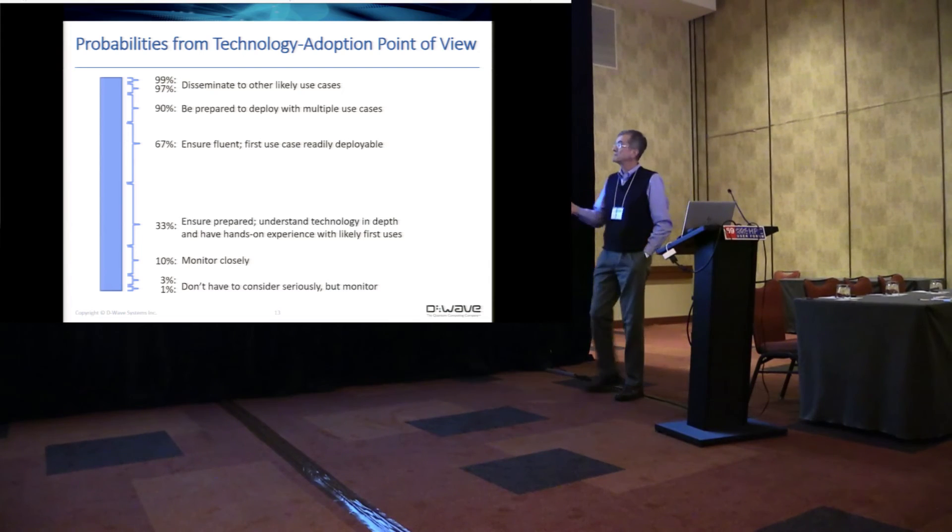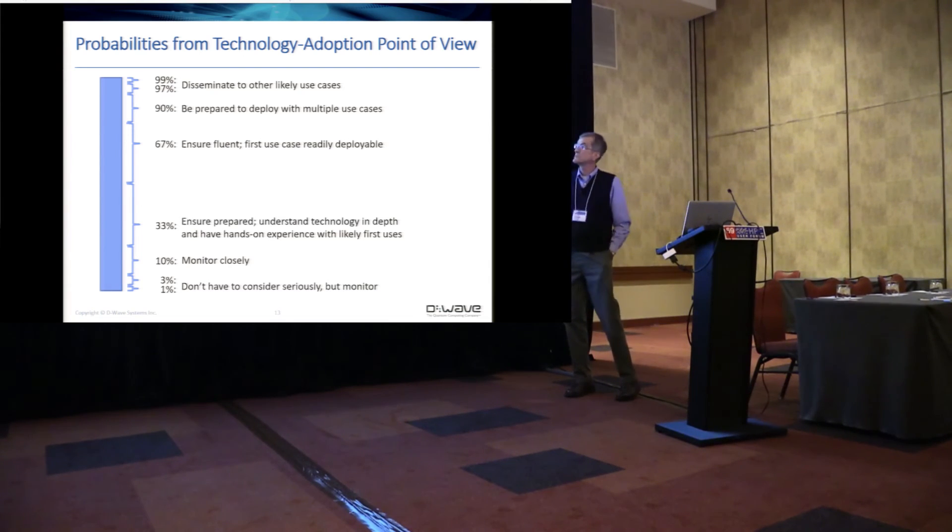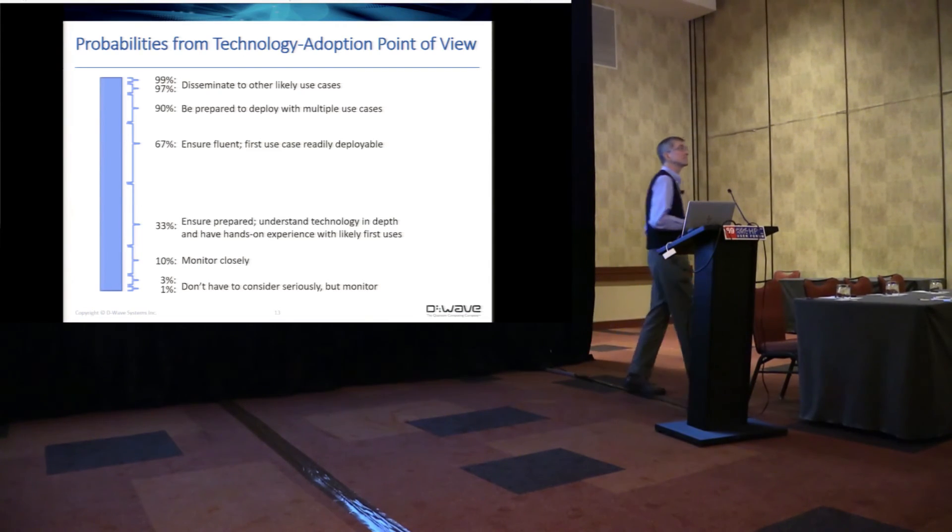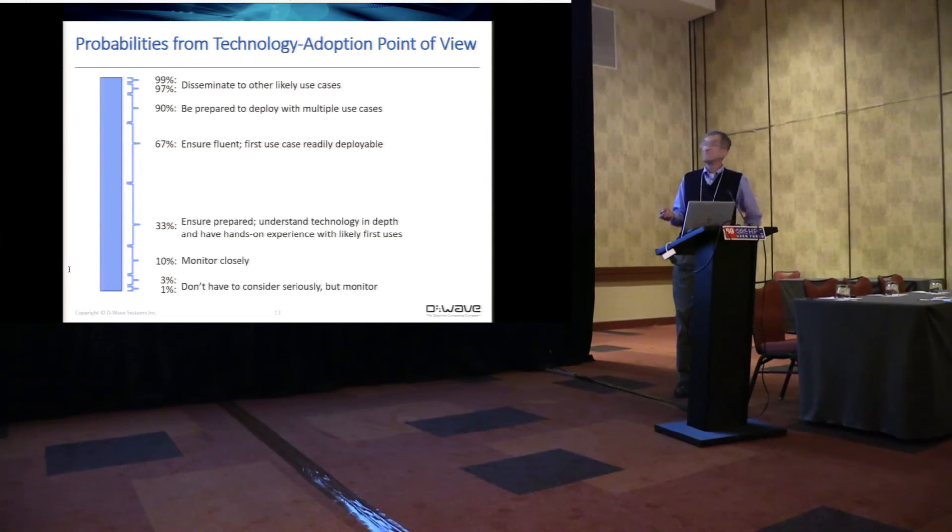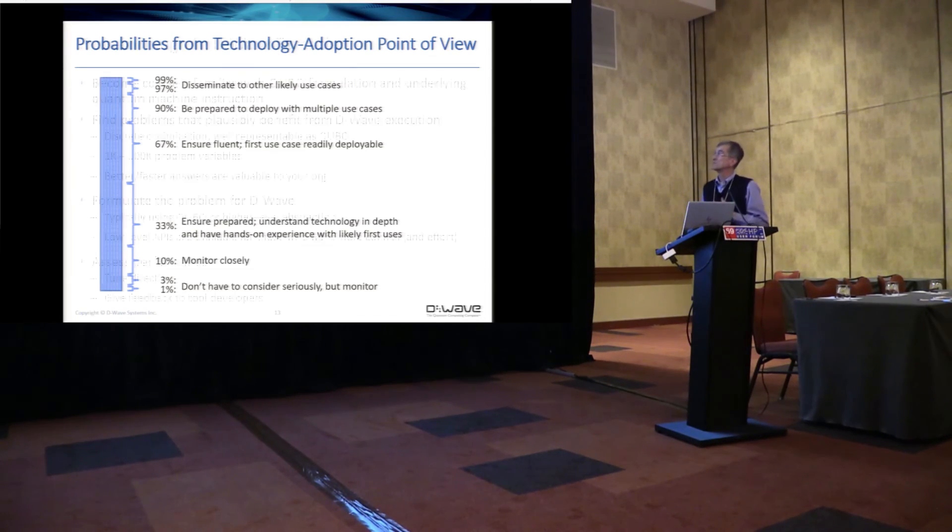My personal opinion is that our systems are at the 33 percent order of magnitude for likelihood of delivering differentiated performance from this next generation system. I could be wrong. It could be less than that. I don't think it's 1 percent. Could well be 10 percent. I don't think it's 67 percent, but that's my personal belief.